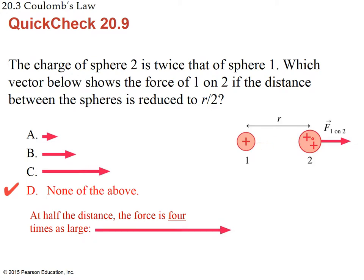By halving the distance, r becomes r/2, so r² becomes r²/4. The factor of 4 moves to the numerator, multiplying the force by 4. The correct vector should be four times as large as the original — which is twice the vector shown. Since none of the listed options match, the answer is E: none of the above.